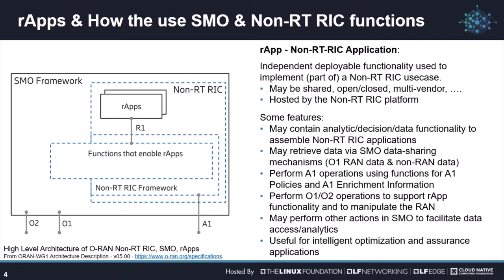The non-real-time RIC comprises the non-RT-RIC framework and the non-RT-RIC applications or R-Apps. These non-RT-RIC applications or R-Apps are independently deployable, modular, multi-vendor applications hosted in the non-real-time RIC. R-Apps access the non-RT-RIC and SMO services they need via the new R1 interface. R-Apps can then leverage the functionality exposed by the non-RT-RIC over R1 to provide added value services for RAN operation — for example, intelligent configuration, orchestration, optimization or assurance functions.